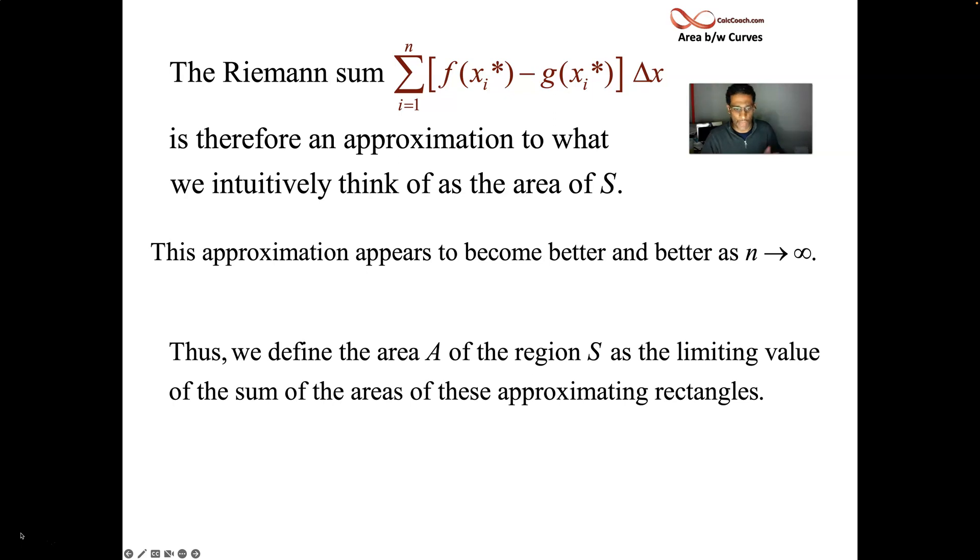Okay, capital A is the area, the region is S. The area of S can be measured using this Riemann sum, the limit as n goes to infinity. The sum, i equals one to n, f of xi star minus g of xi star, all of that times delta x. That's a Riemann sum, which leads us into an integral.